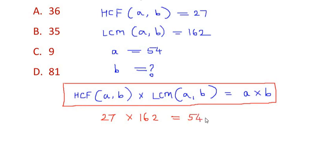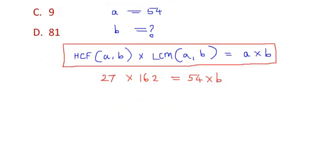So we have to find out the value of b. So here we are going to just divide both sides by 54 and find out the value of b. So we get b as 27 times 162 over 54.